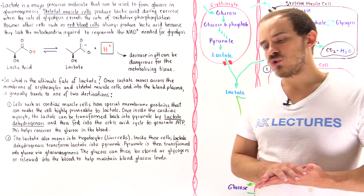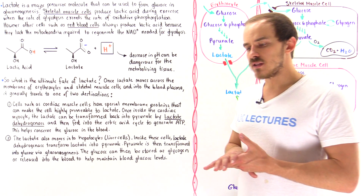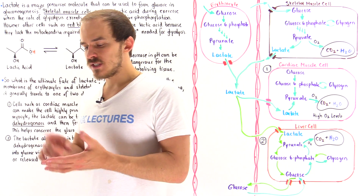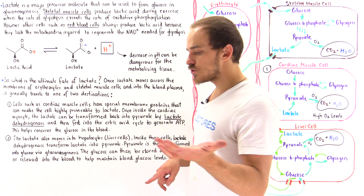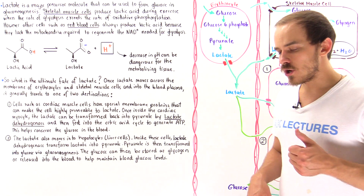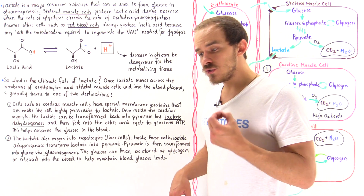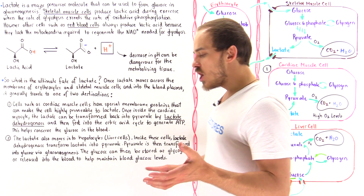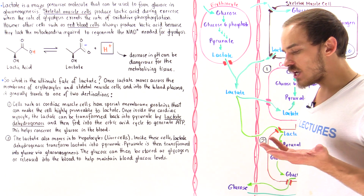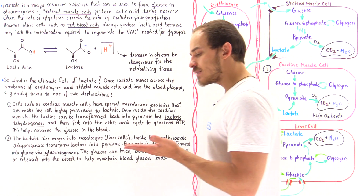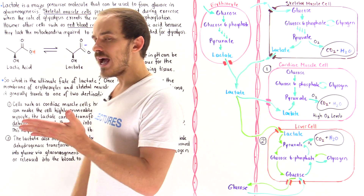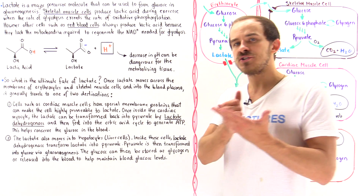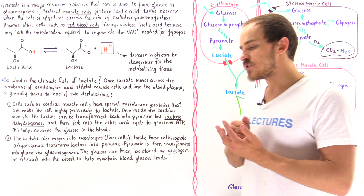To finish off our discussion on gluconeogenesis and glycolysis, let's focus on lactate molecules. As we discussed previously, lactate is one of the major types of non-sugar precursor molecules that our cells use to actually generate glucose in the process we call gluconeogenesis. So why do cells produce lactate? What types of cells produce lactate? And what happens to the lactate once the cells produce it?